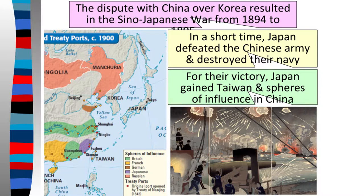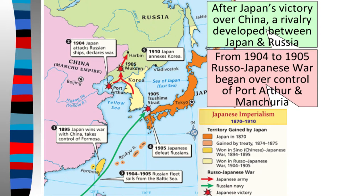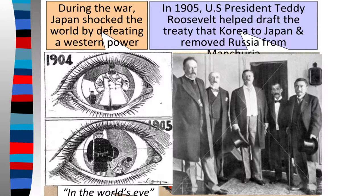After Japan's victory over China, a huge rivalry developed not only between Japan and China but also between Japan and Russia. From 1904 to 1905, Japan went to war with Russia — the Russo-Japanese War — over control of Port Arthur and Manchuria. Japan shocked the world by defeating this huge Western power. In 1905, US President Teddy Roosevelt developed a treaty for Japan and Korea to remove Russia from Manchuria. The US started supporting Japan, saying they didn't want to mess with them since they'd beaten Russia. For a while, the US and Japan got along pretty well, honestly because the US was afraid of Japan.